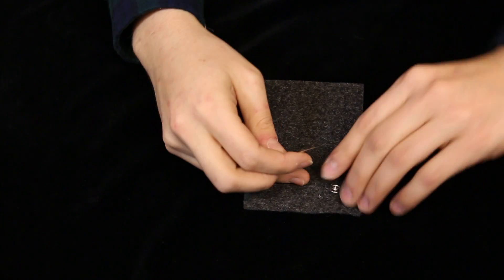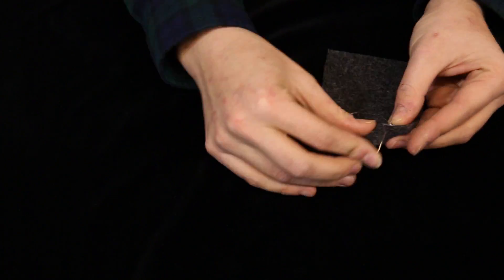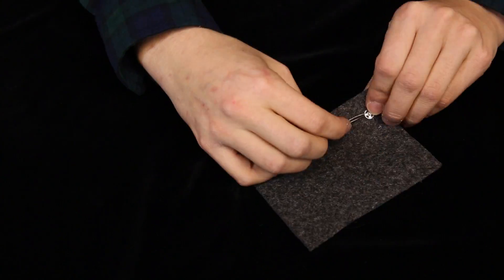Finally, we are going to use metal snaps to create an on-off switch. Start by sewing down one side of the metal snap onto the felt using conductive thread.